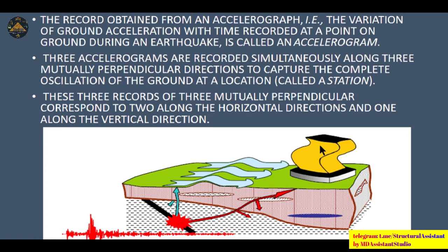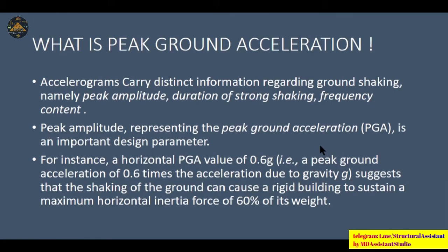Three accelerograms are recorded simultaneously along three mutually perpendicular directions to capture the complete oscillation of ground at a location called a station. So for every earthquake, recorded data will always be along the three axes - X, Y, and Z - which are perpendicular to each other. The accelerogram carries distinct information regarding ground shaking, namely peak amplitude, direction of strong shaking, and frequency content. The peak amplitude representing the peak ground acceleration (PGA) is an important design parameter. For example, if the PGA value is 0.6G, the ground accelerates at 0.6 times the acceleration due to gravity.